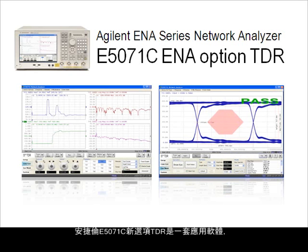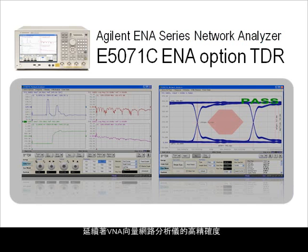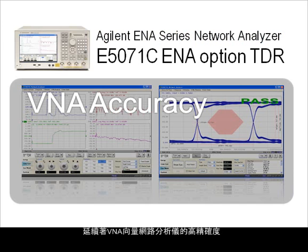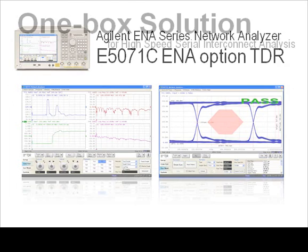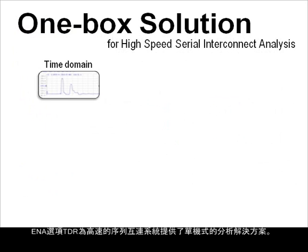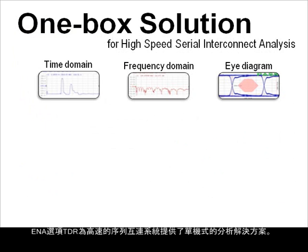The Agilent E5071C ENA Option TDR is application software embedded on the ENA Series Network Analyzer. Inheriting the excellent accuracy from vector network analyzers and adding the versatility of TDR oscilloscopes, the ENA changes the world of TDR measurements. The ENA Option TDR provides a one-box solution for high-speed serial interconnect analysis.